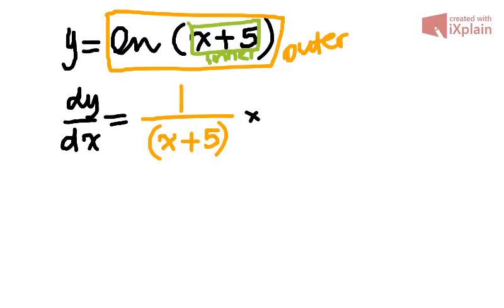That multiplied by, now, the derivative of the inner function. So the inner function is x plus 5. Derivative of x is just 1. We drop the x. Derivative of 5, a constant, is 0. So we don't need to write that, but it's good to just visualize it for now.